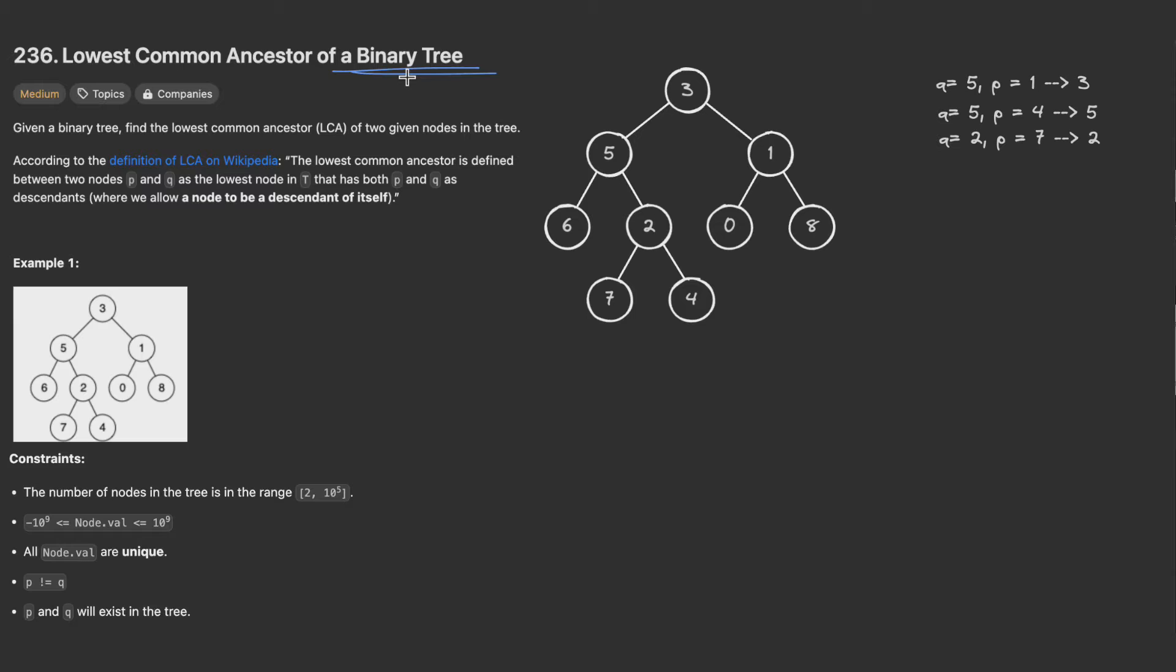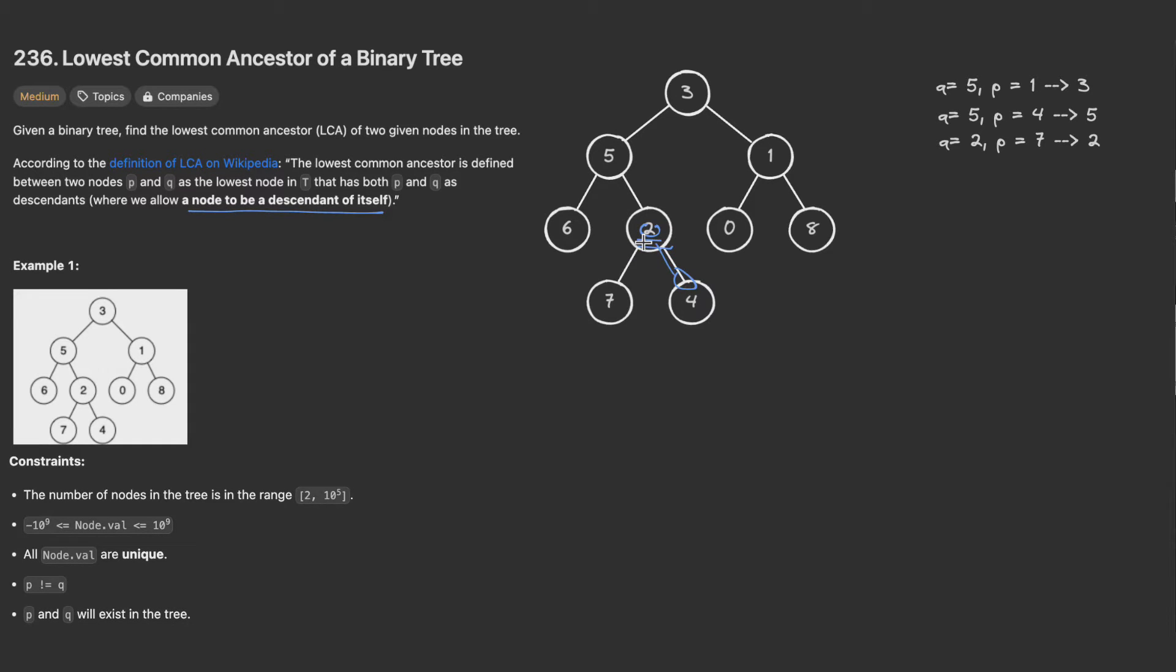Today's problem is to find the lowest common ancestor of a binary tree. Note here it's not a binary search tree but it's a binary tree. You are given a tree, find the lowest common ancestor of two given nodes in the tree. The definition for an LCA or lowest common ancestor is defined between two nodes P and Q as the lowest node in T that has both P and Q as descendant. We allow a node to be a descendant of itself. For example, two and four here, the lowest common ancestor is two.